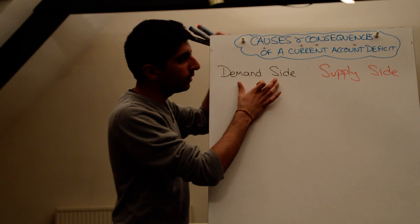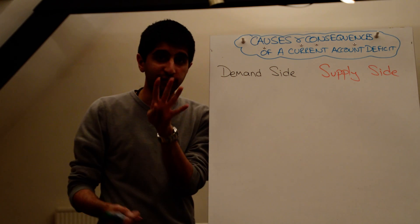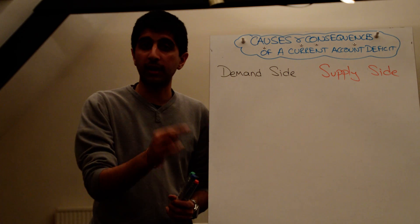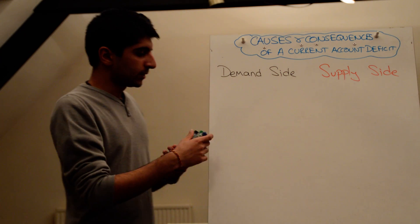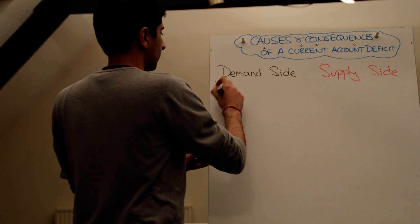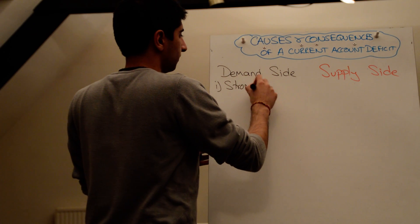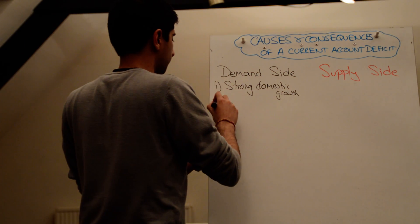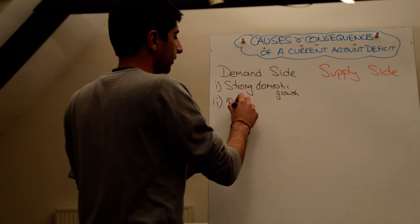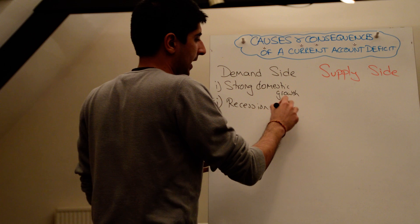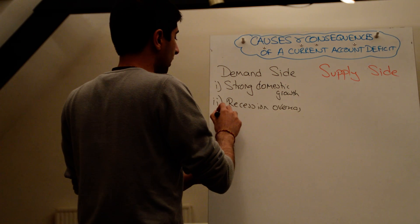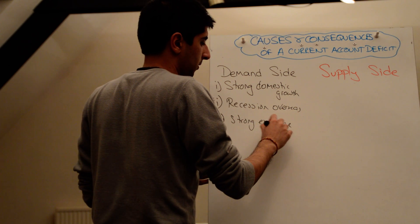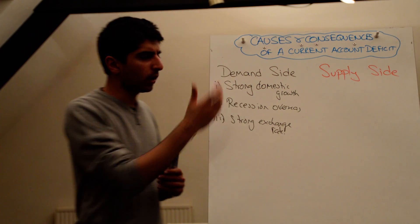Right. We could have demand-side reasons. We could have supply-side reasons. Now, we know the current account has got four sections to it. When we talk about deficits and surpluses, we tend to focus on trading goods and trading services. We focus on those two things. So, demand-side reasons. Well, there might be strong domestic growth. There might be a recession overseas. And a country might have a strong exchange rate.